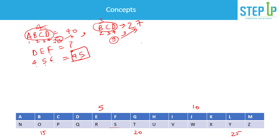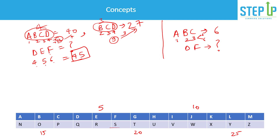There could be multiple other ways to do it. For example, if A B C = 6 and they ask what D F is — you cannot determine the logic from just one example. Adding gives 1+2+3 = 6, and multiplying also gives 6. Since two operations give the same result, they must give you another example to clarify the logic.